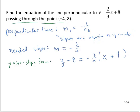If we're asked for the slope-intercept form, well, we know how to get there. We apply the distributive property. Y minus 8 equals negative 3/2 x minus, 3/2 of 4 is, 3 times 4 is 12, 12 over 2 is 6. And then I will add 8 to both sides. And I'll have y equals negative 3/2 x plus 2.